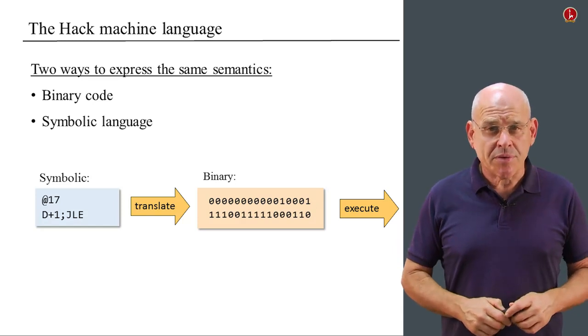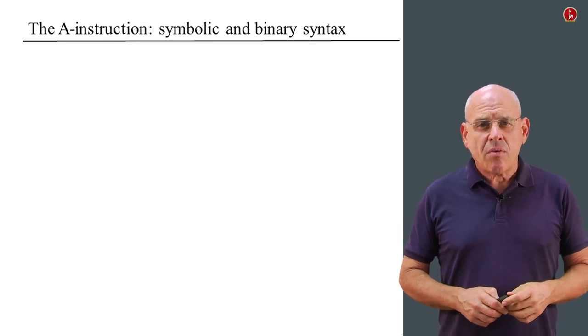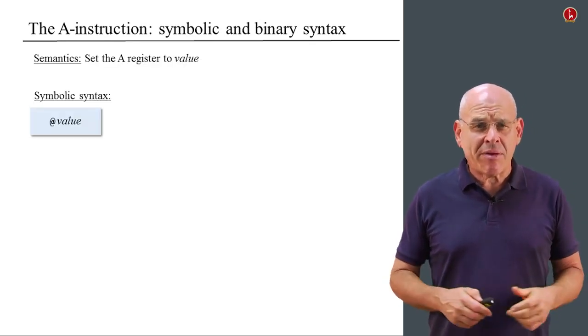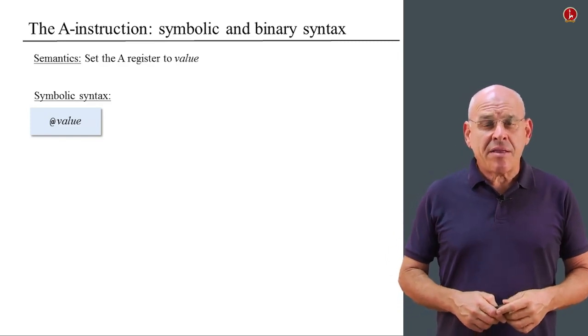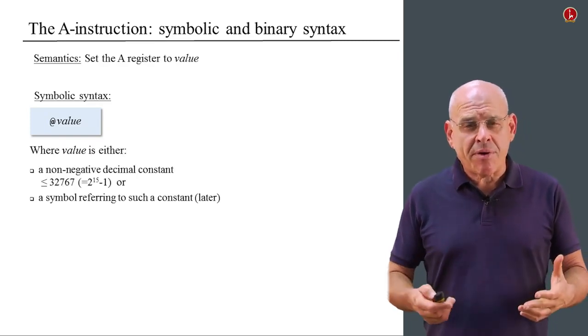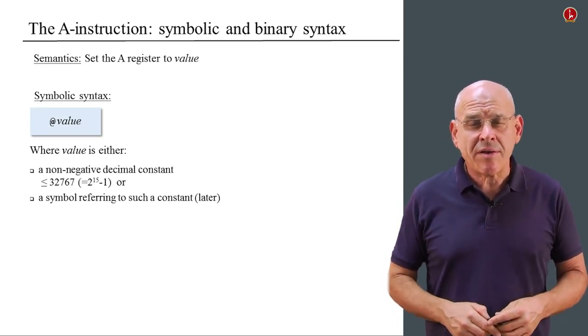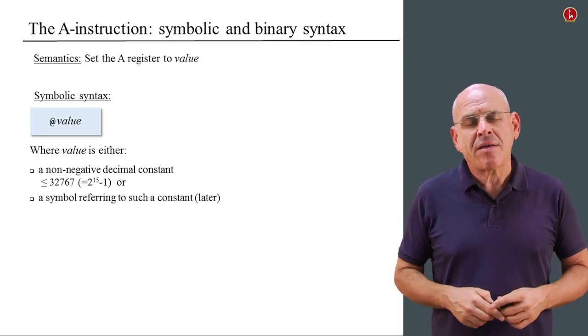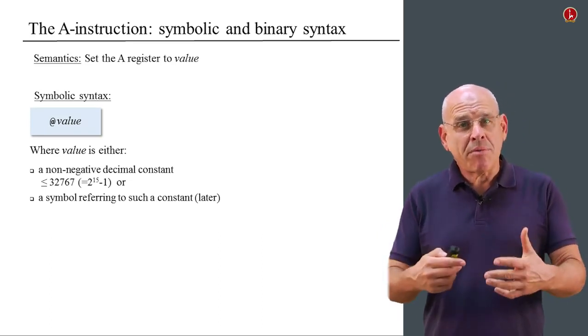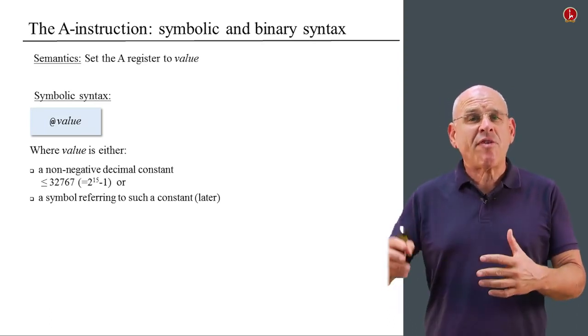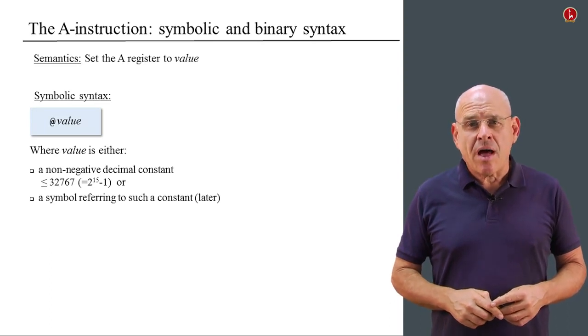So here is the symbolic and binary syntax of the A instruction. Well, the symbolic syntax is something that we've seen before: at a certain value. And this value can be either a number which is at most 2 raised to the power of 15 minus 1. You may be wondering where this number comes from and you'll see it in just a minute. Or it may be a symbol which refers to such number. And we're going to defer the discussion of symbols to a later unit.